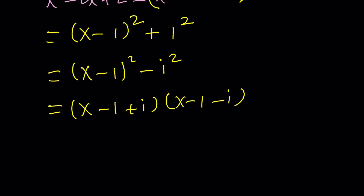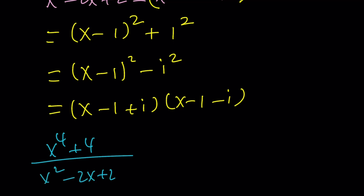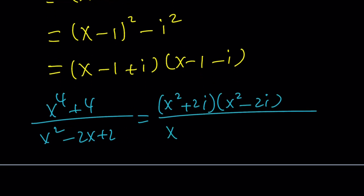We're going to plug it in and see what happens — it's not going to simplify right away. So x to the 4th plus 4 divided by x squared minus 2x plus 2 equals the numerator factored as x squared plus 2i times x squared minus 2i, and the denominator as x minus 1 plus i times x minus 1 minus i. When you look at this, it doesn't simplify at all.